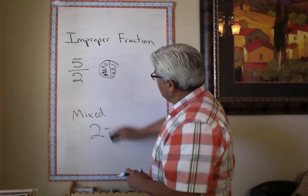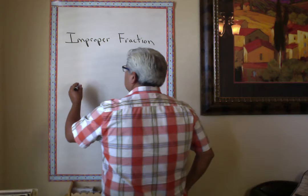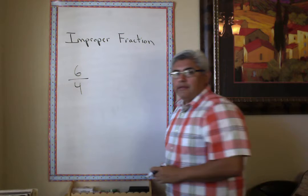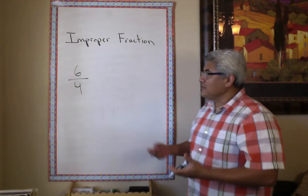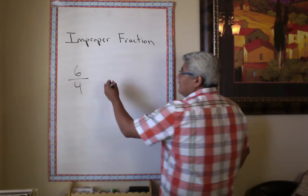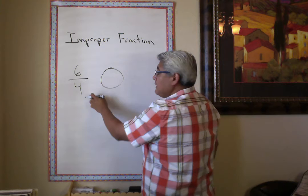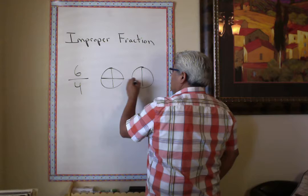Let's do one more problem. We're going to do an improper fraction — let's say it's six out of four. It's impossible to get six pieces from four, that's why it's called improper. So we can do a drawing. We're going to need a couple of wholes — one whole cut into four. Your denominator tells you how many pieces you're going to have from each whole. That's four.